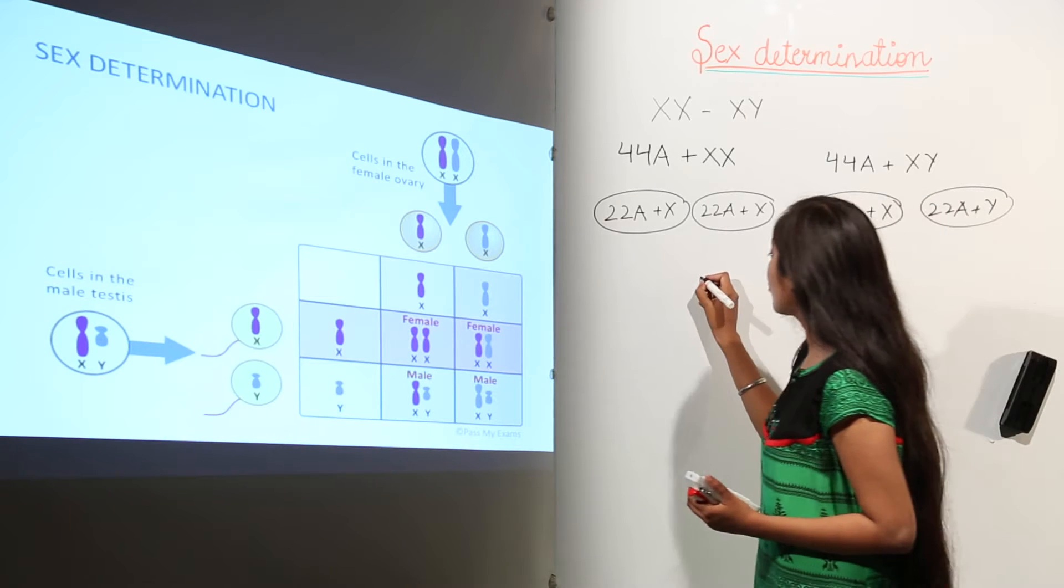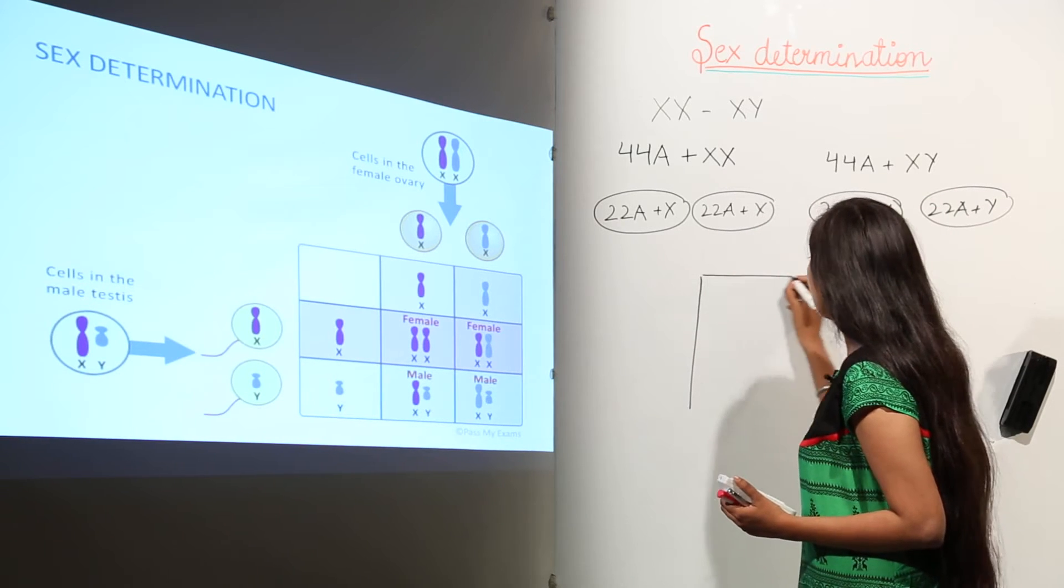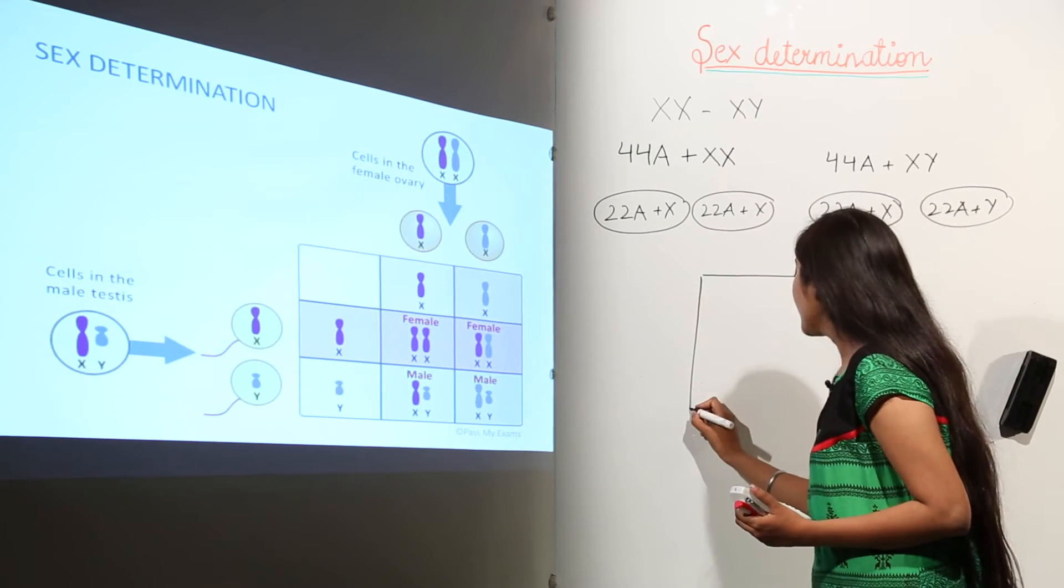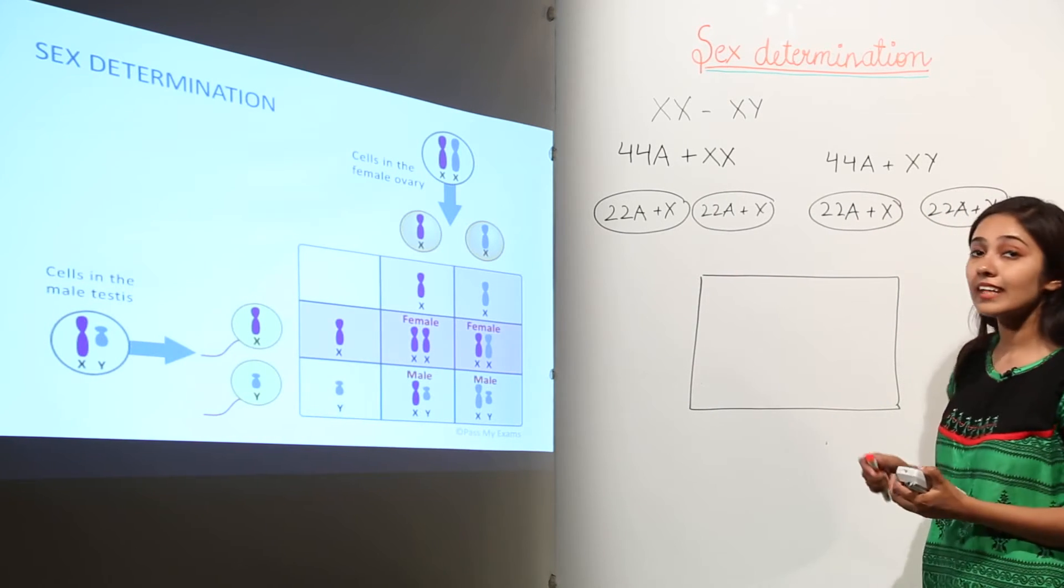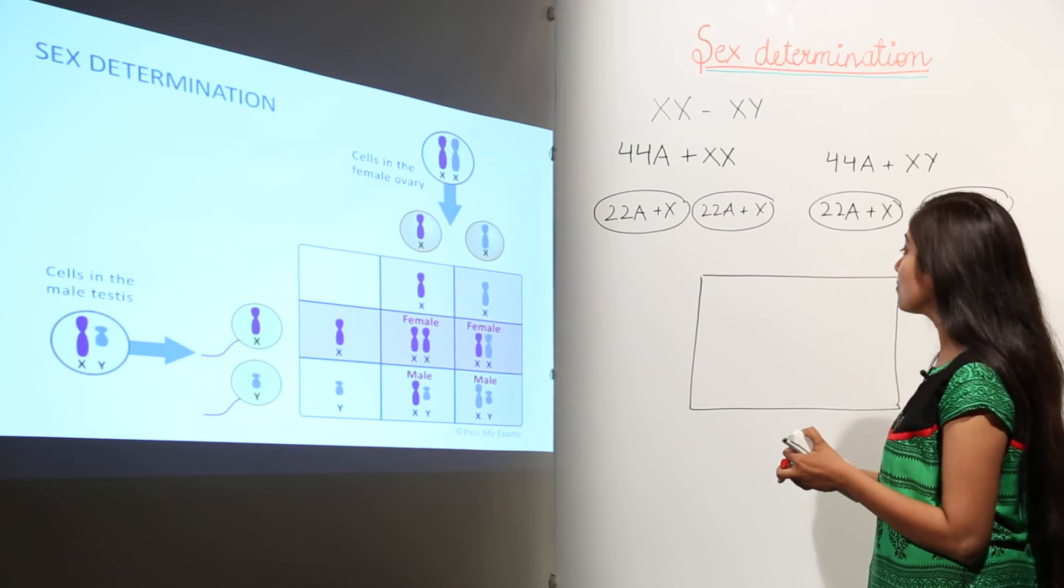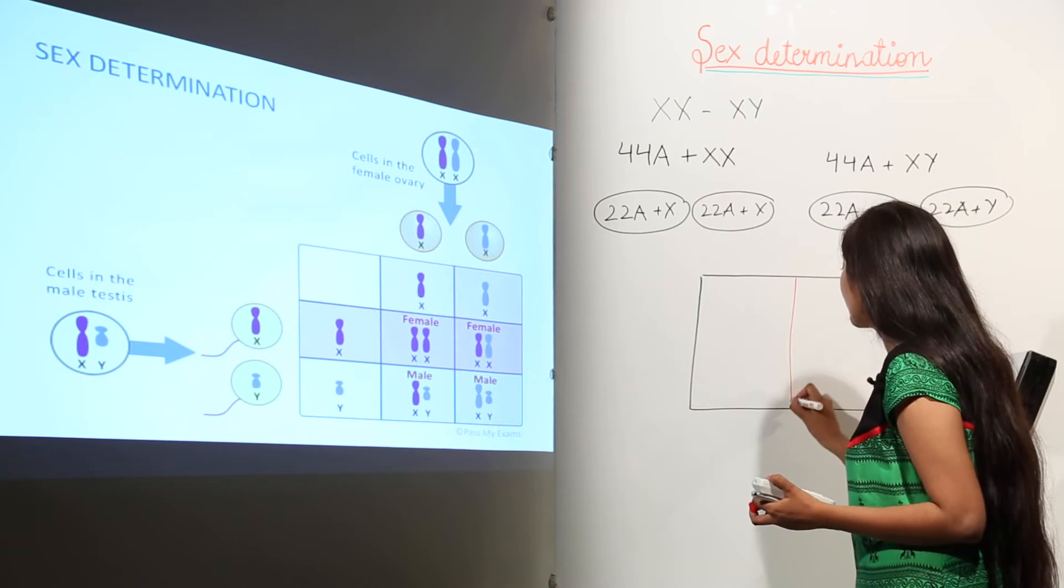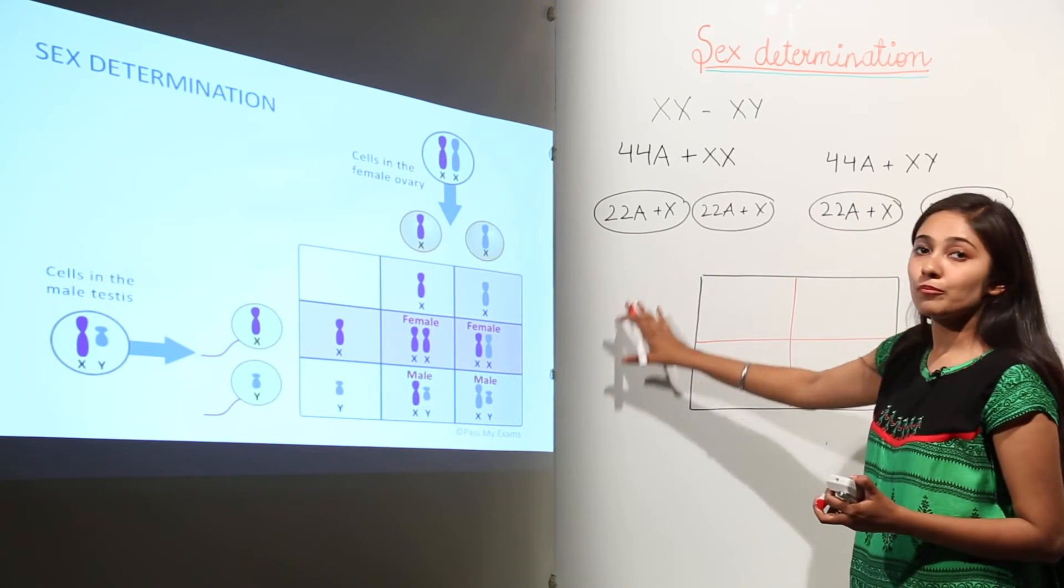So when we form a Punnett square, here I am going to form a Punnett square including the autosomes also just for your understanding of the total chromosomes. So remember in case of Punnett square, the male gametes are put on the left hand side.